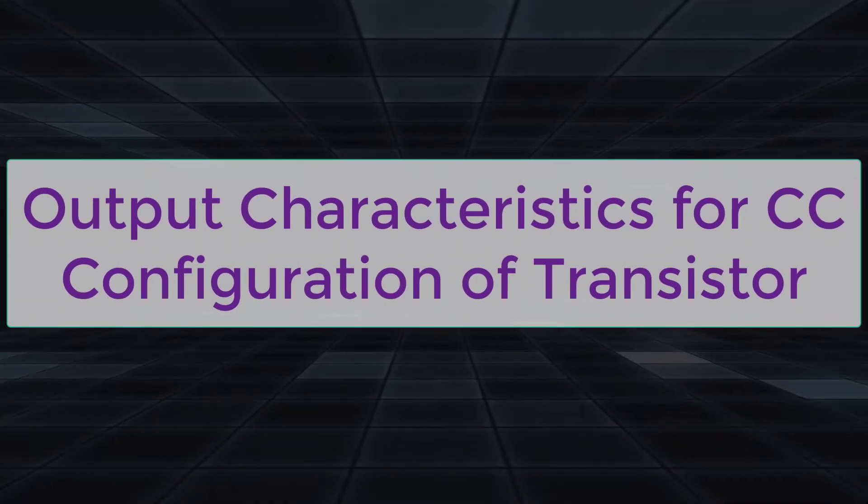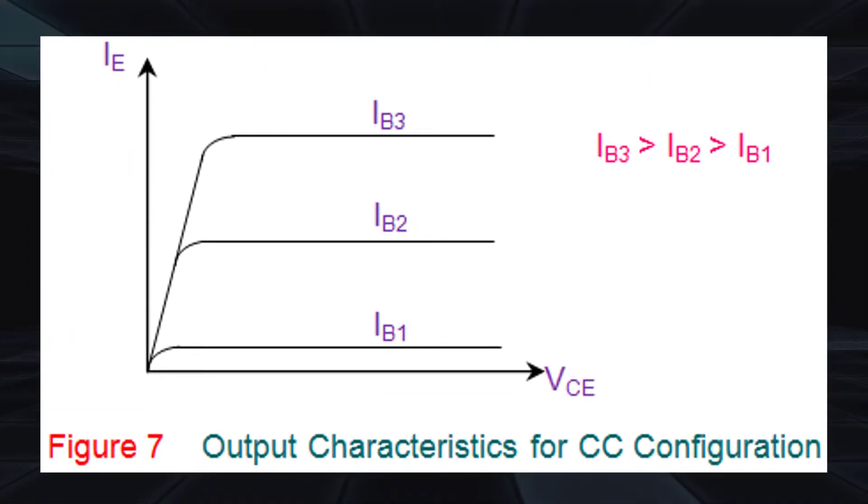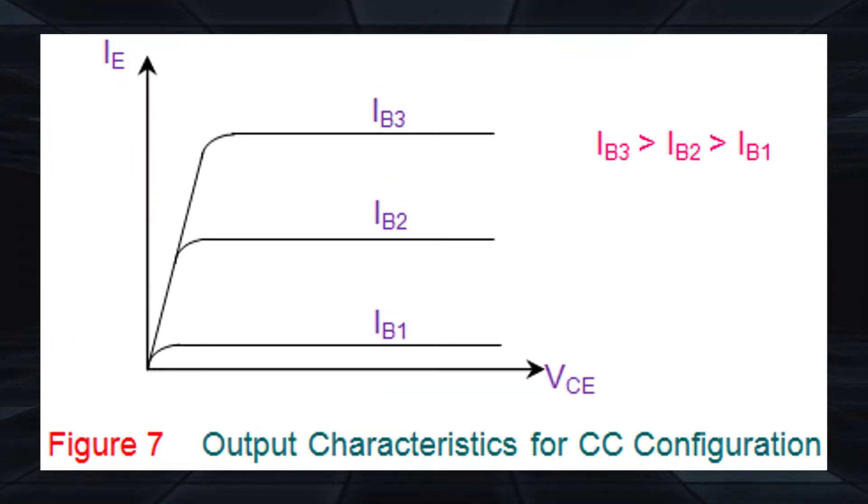Output characteristics for a CC configuration of transistor. The figure shows the output characteristics for the CC configuration which exhibit the variations in IE against the changes in VCE for constant values of IB.